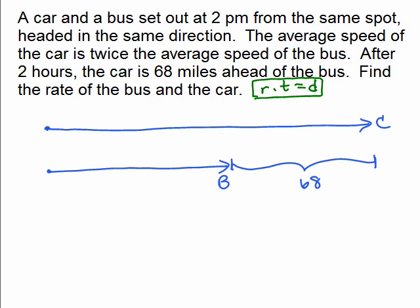A car and a bus set out at 2 p.m. from the same spot headed in the same direction. We're assuming you're leaving at the same time, going in the same direction. The car is going faster, twice as fast.